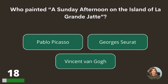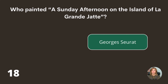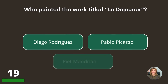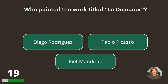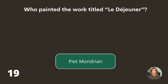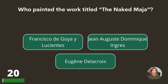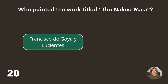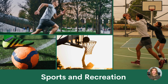Who painted A Sunday Afternoon on the Island of La Grande Jatte? Who painted the work titled Le Déjeuner — Diego Rodriguez, Pablo Picasso, or Piet Mondrian? Who painted the work titled The Naked Maja — Francisco Goya, Jean-Auguste-Dominique Ingres, or Eugène Delacroix? Francisco de Goya.